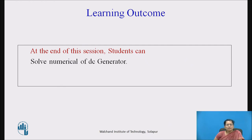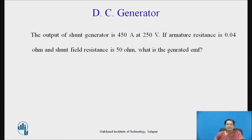At the end of this session, students can solve numericals of DC generator. So let us see the first numerical. The output of a DC shunt generator is 450 ampere at 250 volt. If armature resistance is 0.04 ohm and shunt field resistance is 50 ohm, what is the generated EMF?